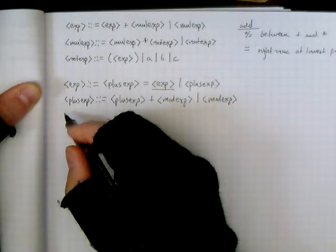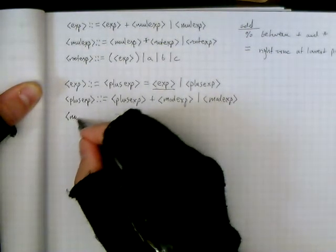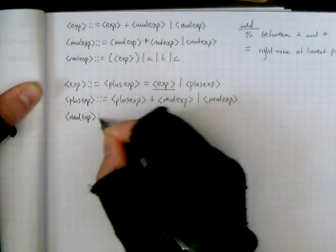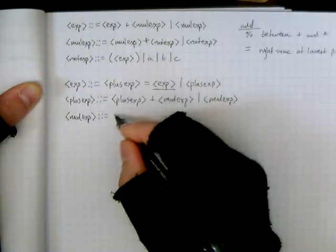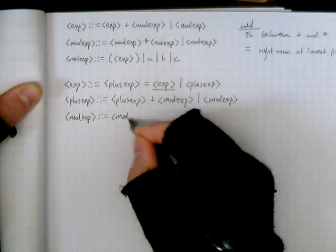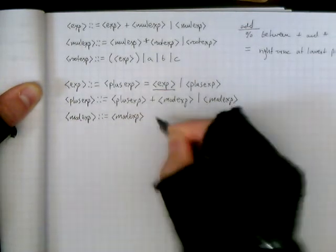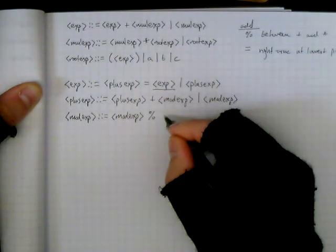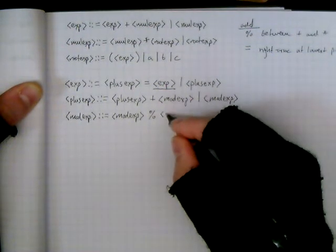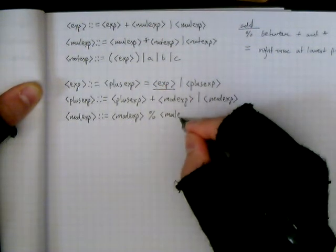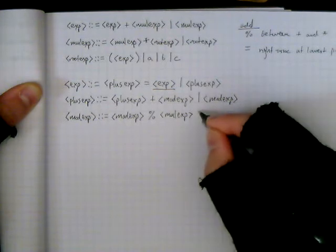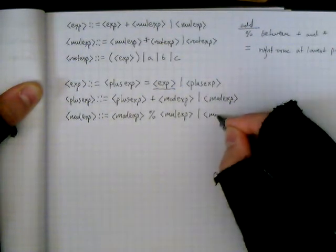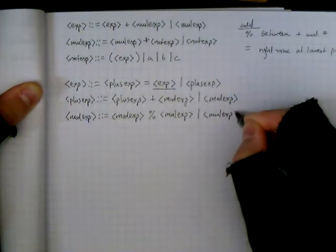Once we have done that, we then define mod exp, using a left associative, so it calls mod again. And then the percent operator. And then the next one calls mol, or for multiplication, mol exp, or just simply mol exp, right?